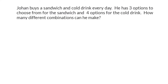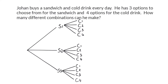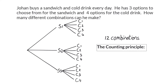To get all the different combinations, you can either pair up a specific sandwich and cold drink one by one, or you can draw a tree diagram. In the tree diagram, we have sandwich option one, option two, and option three, combined with the four options of cold drinks. From here, we can see that there are 12 different options or combinations that he can make for his sandwich and cold drink.